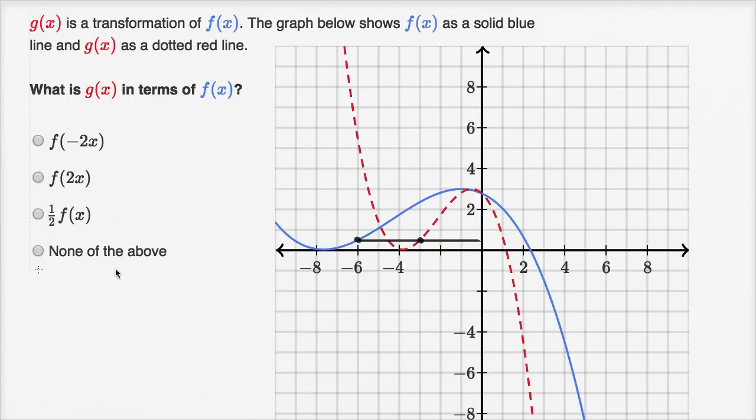Let's write that down. f of negative six is equal to g of negative three. These are corresponding points. If you apply the transformation at the point (-6, f(-6)), you get to the point (-3, g(-3)).